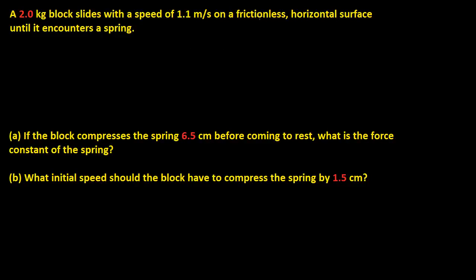So we have a block that's sliding across a frictionless horizontal surface that encounters a spring. The block's mass is 2 kilograms and the speed is 1.1 meters per second. And it says if the block compresses a spring 6.5 centimeters before coming to rest, what is the force constant of the spring?